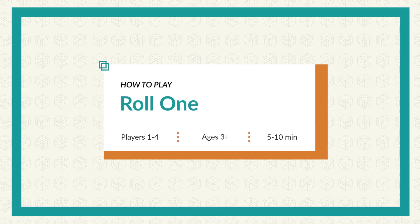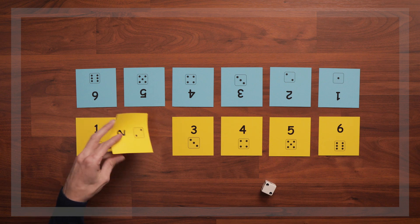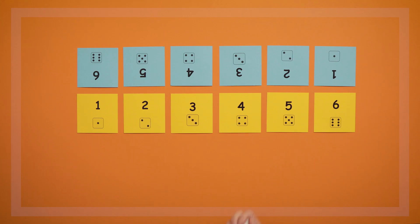This game is called Roll 1. It's the first of three roll games, which all involve rolling dice to match and turn over cards laid out on the table.